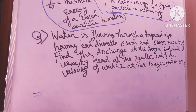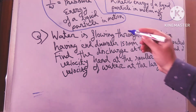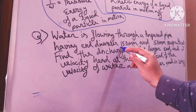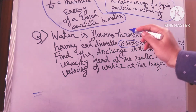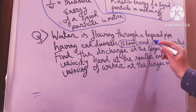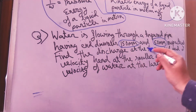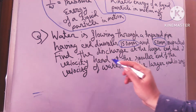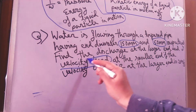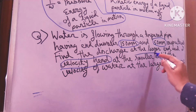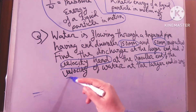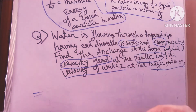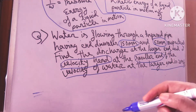Now friends, we are discussing a problem. Water is flowing through a tapered pipe having end diameters of 150 mm and 50 mm respectively. Find the discharge at the larger end and the velocity head at the smaller end, if the velocity of the water at the larger end is 2.5 meters per second.